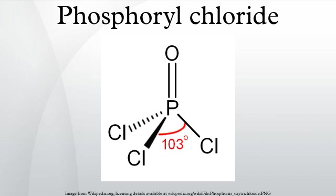Preparation: phosphoryl chloride can be prepared by various methods. Notable examples include the reaction of phosphorus trichloride with oxygen at 20–50 degrees Celsius: 2PCl3 + O2 → 2POCl3.